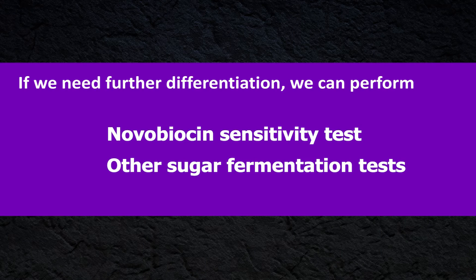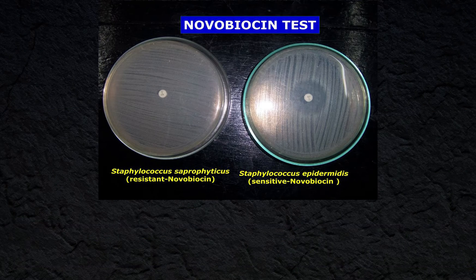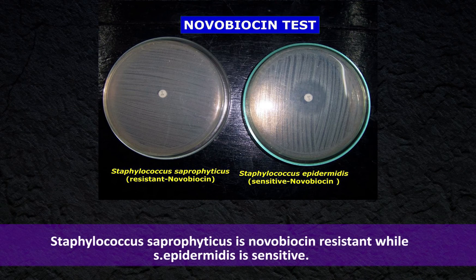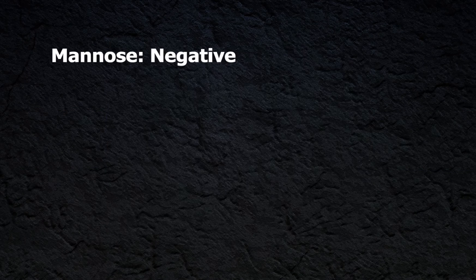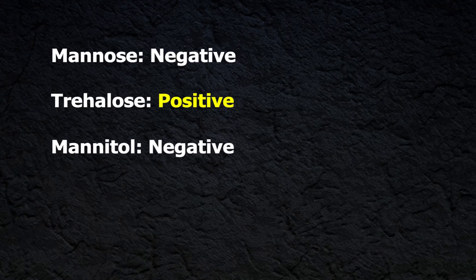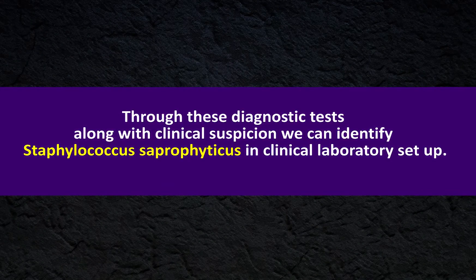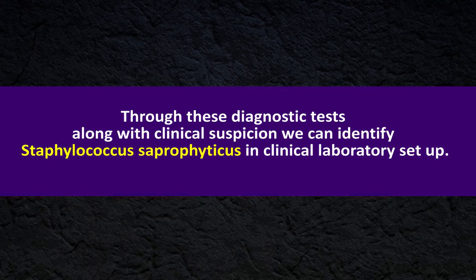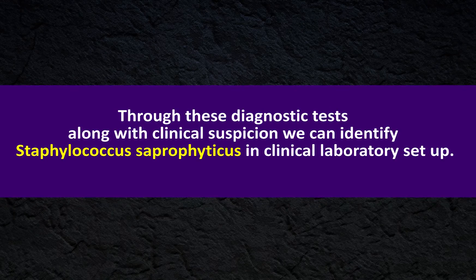If we need further differentiation, we can perform the novobiocin sensitivity test and other sugar fermentation tests. Staphylococcus saprophyticus is novobiocin resistant, while Staphylococcus epidermidis is novobiocin sensitive. If we consider some sugar fermentation results, it gives mannose-negative, trehalose-positive, and mannitol-negative results. Through these diagnostic tests, along with clinical suspicion, we can identify Staphylococcus saprophyticus in a clinical laboratory setup.